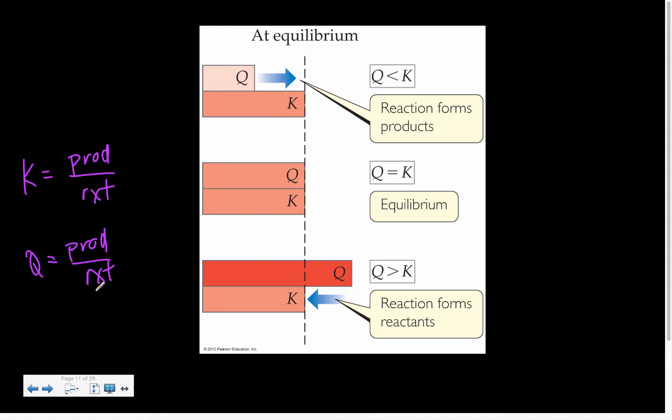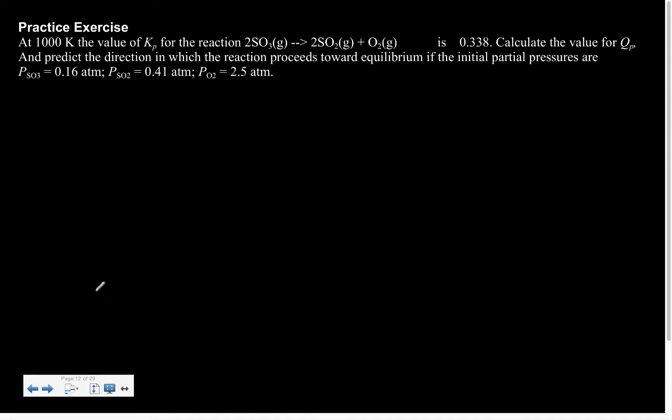It's really logical if you just remember that my Q expression and my K expressions are really just the relation between product and reactant. So then if Q is too big, how do we make it approach K? If Q is too small, how do we make it approach K?